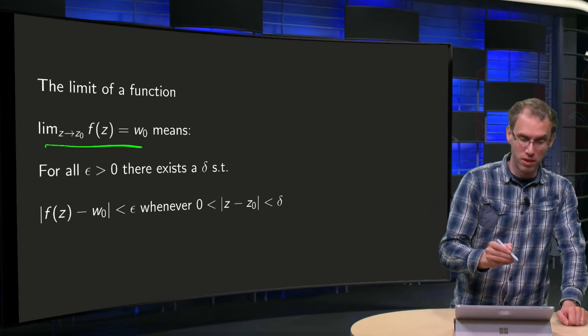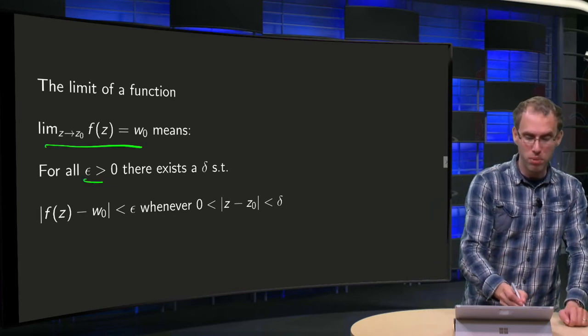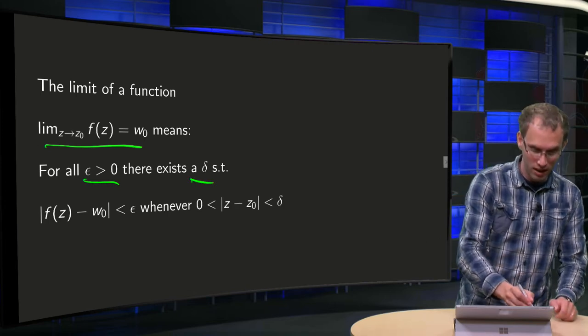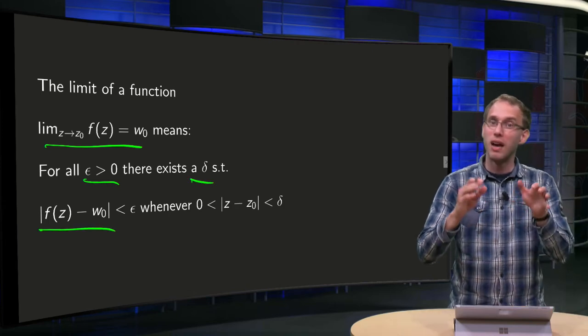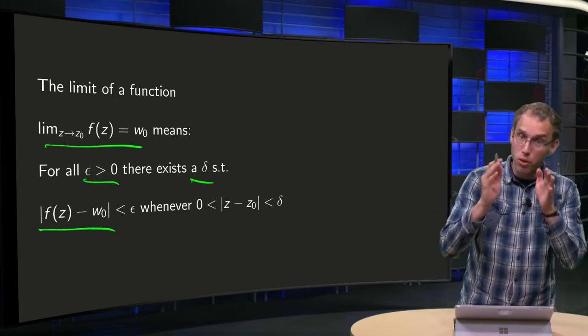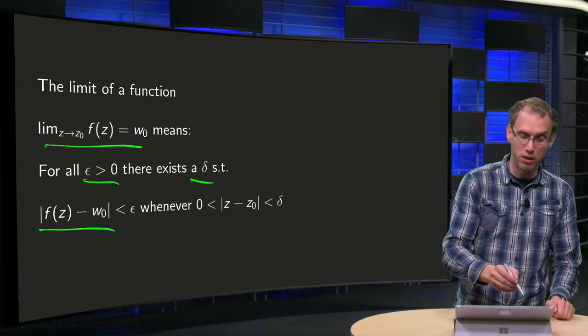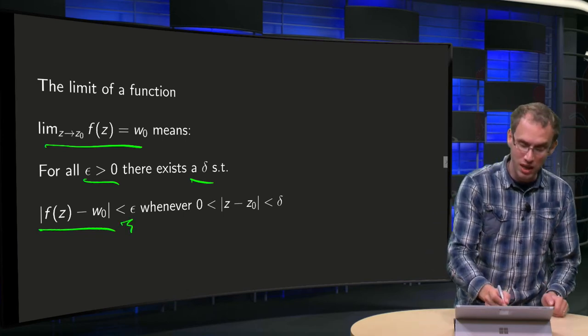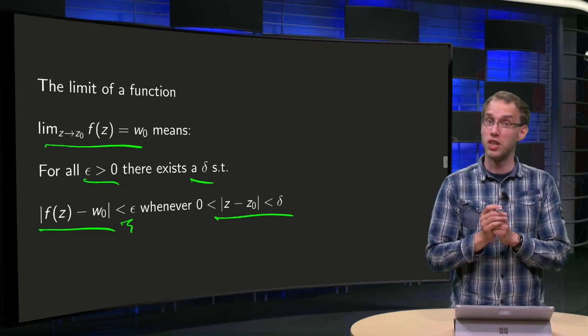That means that formally, for all ε > 0, there exists a δ such that you can get f(z) as close to w₀ as you want. You can get the norm |f(z) - w₀| smaller than this ε, provided you take z close enough to z₀.